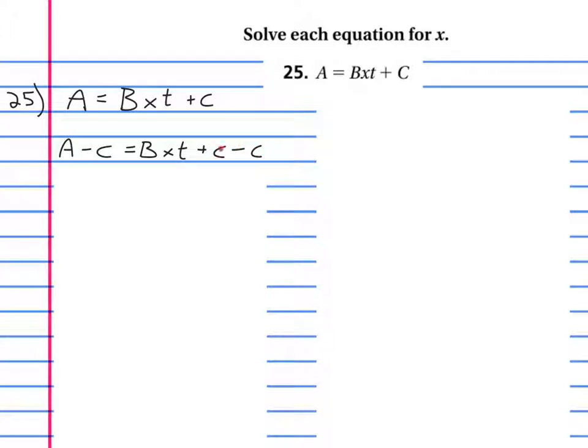Now we've got to simplify that. How do you simplify this? This cancels out right here. Those are inverse operations and they cancel out. So you get a minus c equals b, x, t.